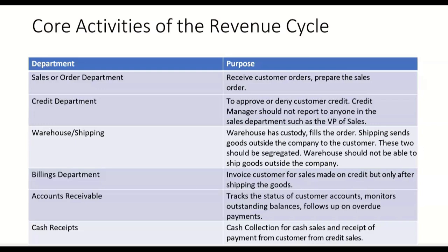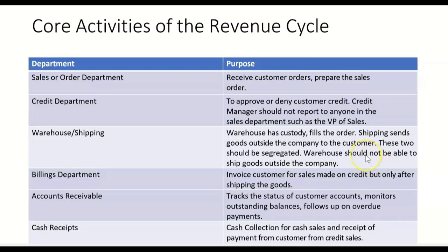The treasurer is down in the cash receipts department and doesn't really come into play until the company gets paid for the sale. So far we have the sales department and the credit department. If the sales order is approved by the credit manager, then warehouse and shipping come into play. Warehouse has custody of the goods and fills the order, while shipping sends the goods outside the company to the customer. These two departments should be segregated — warehouse should not be able to ship goods outside the company.